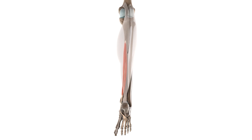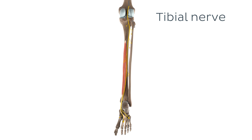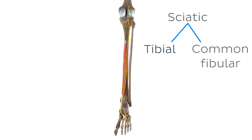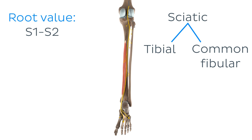For a muscle to perform its functions, it needs to know what action you want to perform, how to do it and when. This type of information is carried by nerves, and muscles are innervated by many of them. The flexor digitorum longus is no exception — it's innervated by the tibial nerve, which you can now see on our 3D model. The tibial nerve is one of the terminal branches of the longest nerve in the human body, the sciatic nerve. The root values of the tibial nerve's muscular branches to the flexor digitorum longus are S1 and S2.